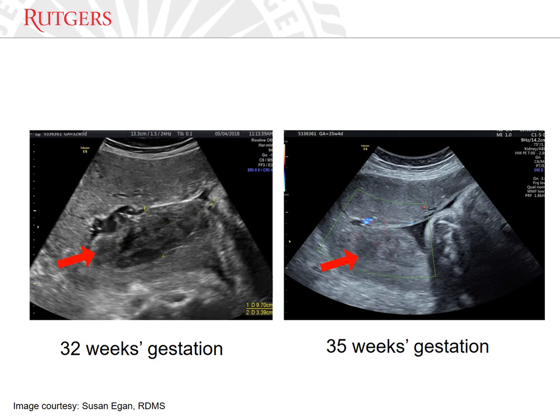This case comes from a pregnant patient with vaginal spotting who was observed to have a large subchorionic hematoma at 32 weeks gestation. She was diagnosed with abruption and, after a period of inpatient surveillance, was discharged home with outpatient follow-up. At 35 weeks gestation, she had a repeat evaluation of the subchorionic hematoma. The hematoma was visible but appeared slightly smaller and had a similar appearance to adjacent placental tissue.